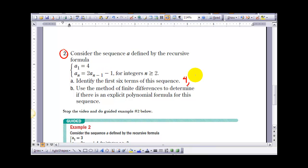So I'd go 4 times 2 is 8, 8 minus 1 is 7. 7 times 2 is 14, 14 minus 1 is 13. 13 times 2 is 26, 26 minus 1 is 25. 25 times 2 is 50, 50 minus 1 is 49. And finally 49 times 2 is 98, 98 minus 1 is 97. So that would represent the first 6 terms of that sequence. So here's term 1, 2, 3, 4, 5, and 6. Part B says use the method of finite differences to determine if there is an explicit polynomial formula for this sequence.